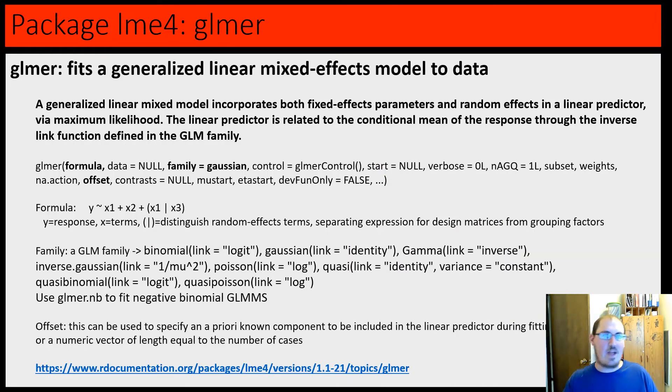Okay, next we have the function, glmer. Which fits a generalized linear mixed model. Very similar to lmer. The main difference is you also need to set a distribution family. So, the default is Gaussian or normal. But they do have most standard model families, along with their link function. So, binomial, gamma, Poisson. Though, you need to use a different function, glmer.nb, to do specifically the negative binomial.